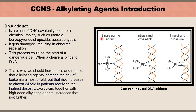An intrastrand crosslink is formed when cisplatin covalently bonds with 2 guanine bases in only one strand of DNA. An interstrand crosslink is formed if cisplatin covalently bonds with 2 guanine bases across the 2 strands of DNA.